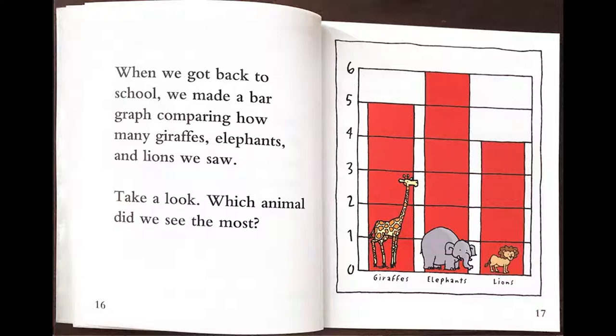When we got back to school, we made a bar graph comparing how many giraffes, elephants, and lions we saw. Take a look. Which animal did we see the most? The most were elephants, with a count of six.